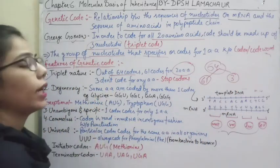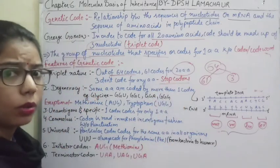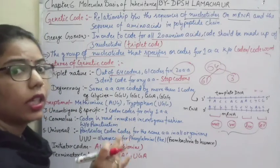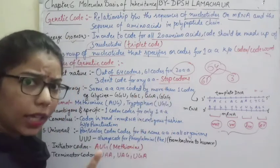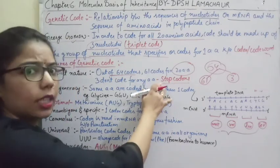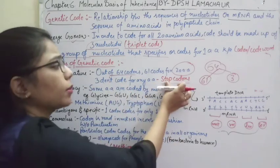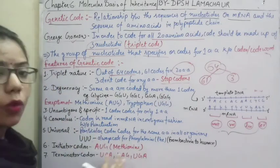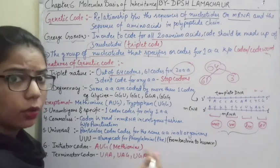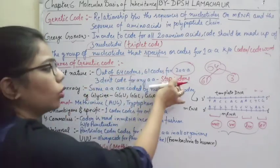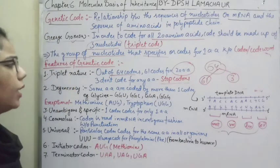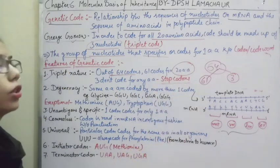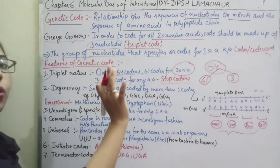The remaining 3 codons out of 64 will not code for any amino acid, and that is why they are known as stop codons. We will use these stop codons in translation to stop the protein synthesis. The three stop codons are UAA, UAG, and UGA. So we have 61 codons used for coding amino acids and 3 stop codons.